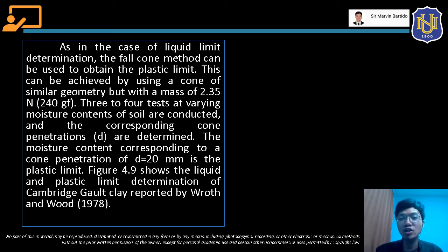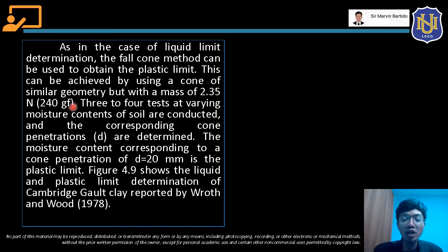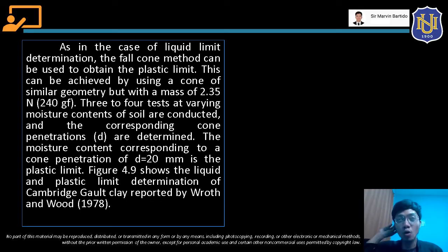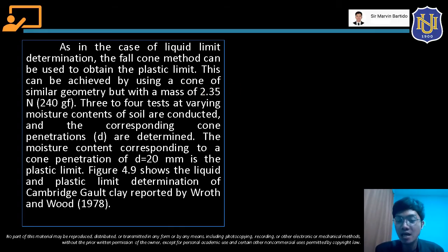Katulad sa pag-determine natin ng liquid limit, pwede rin natin gamitin yung fall cone method dito sa pag-obtain ng plastic limit. But in this case, different cone yung gagamitin natin — similar yung geometry pero different yung mass niya. Kung yung mass na ginamit natin ng cone doon sa liquid limit test using fall cone method is 0.78 N, dito class 2.35 N — so dito mas mabigat yung kailangan na cone.